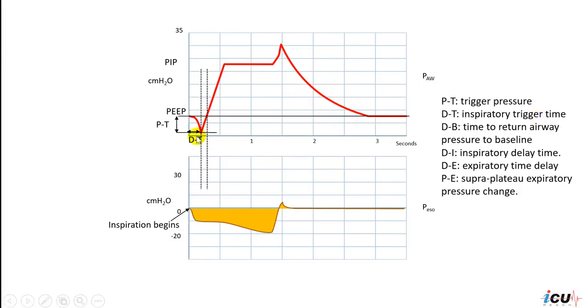And then once the machine is triggered the pressure starts to go up to reach the baseline again which is the PEEP level. That PEEP level that is set by the operator, this time that is required to reach that level is called the time to return airway pressure to baseline.